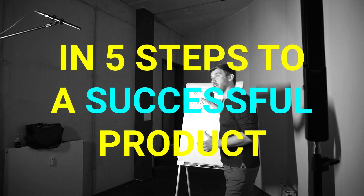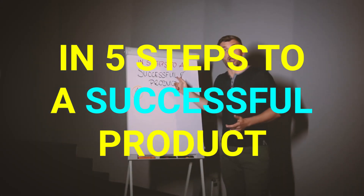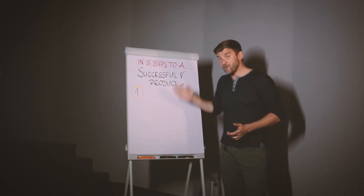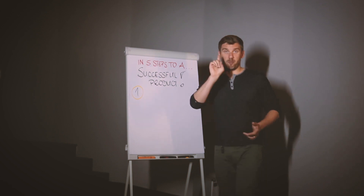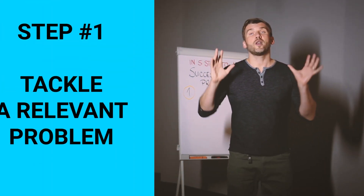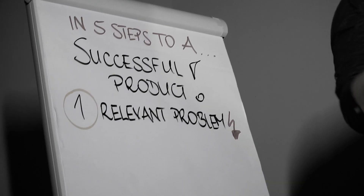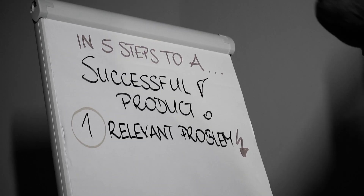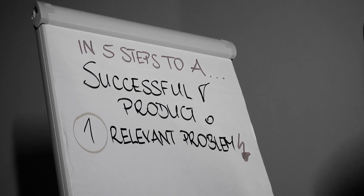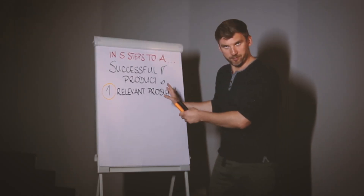So here we go — in five steps to a successful product. Let's make it a checklist. Step number one: start with a relevant problem. First learning of the day: have a relevant problem.